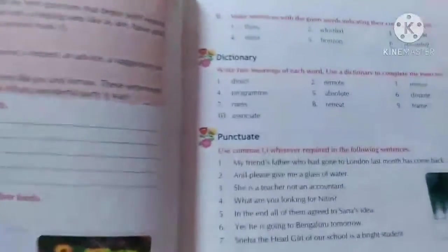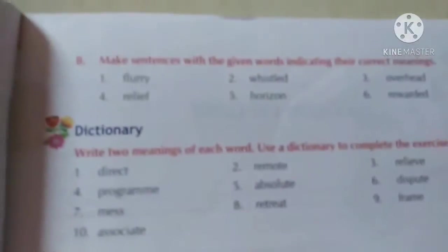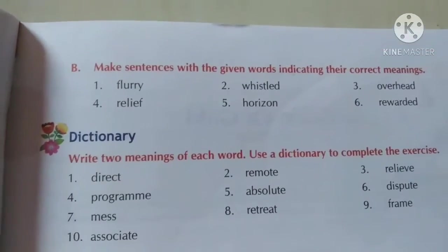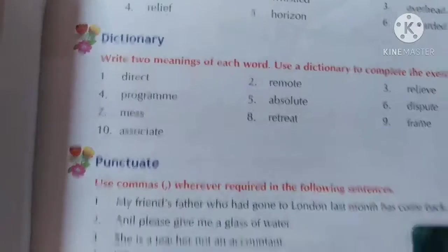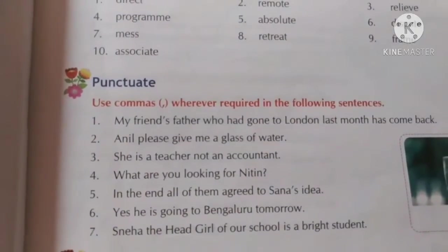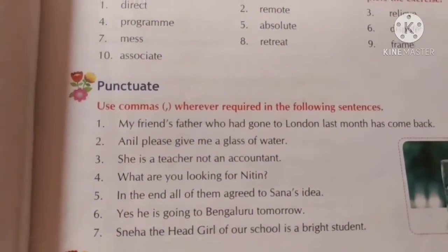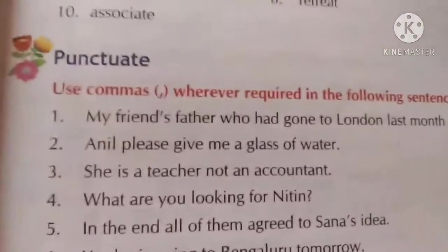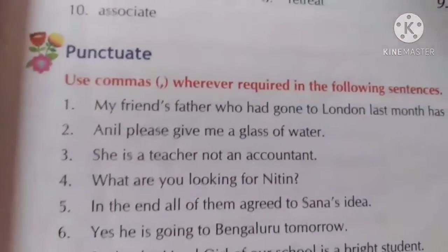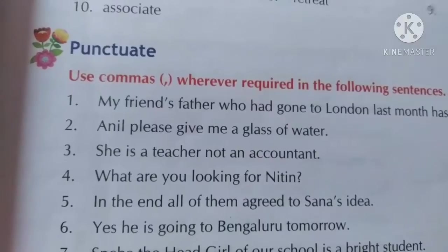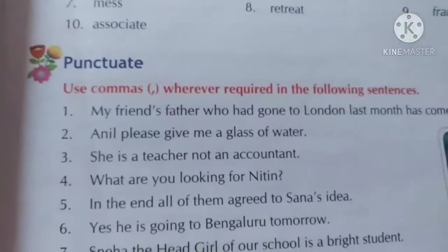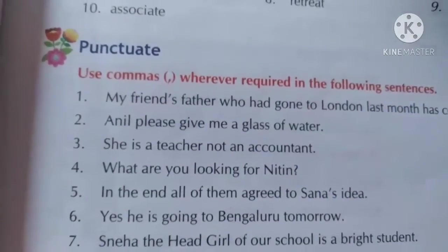After that we have make sentences with the given words. Phir hai dictionary — write two meanings. And after that we have punctuation. Punctuate mein kya karna hai? Comma matlab pause. Hum log pause kahan kahan lagayenge? Jahan pe bhi hum log ko atakna hota hai, wahan pe hum log comma lagate hain.